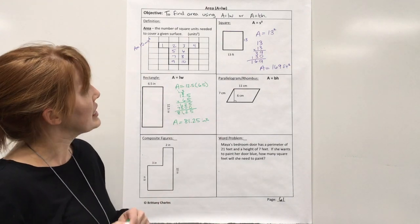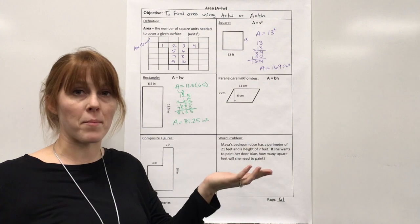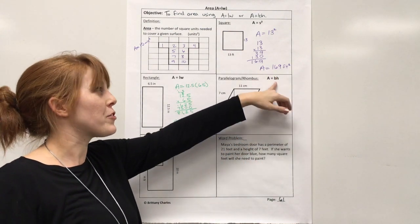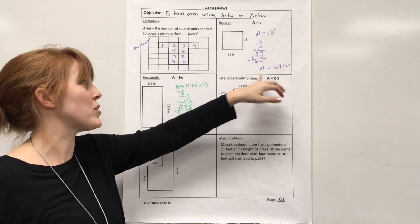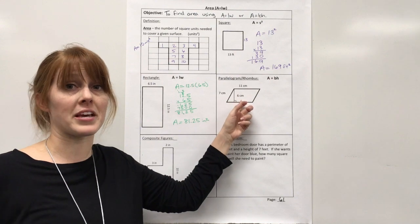Next shape, we have a parallelogram, and this also works for a rhombus. We're going to do base times height. Now, we prefer to use base times height here because we don't want you to think length times width, oh, it must be the side, because it's not true in this case.